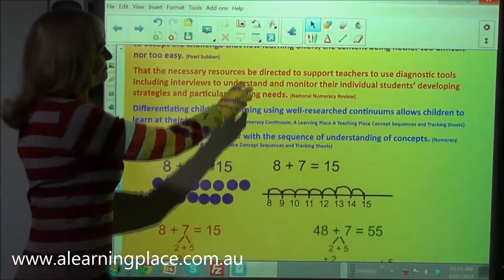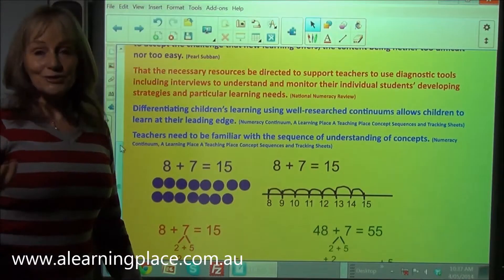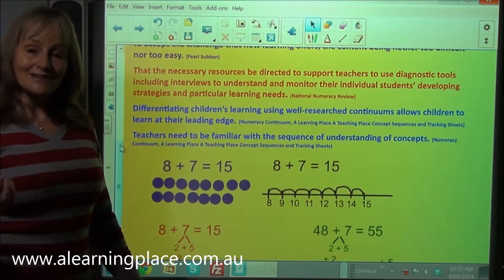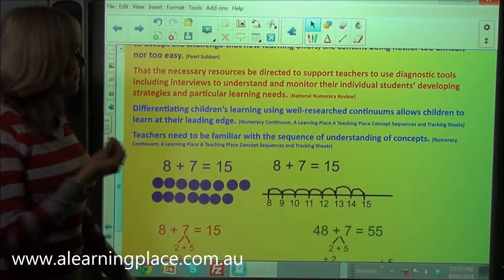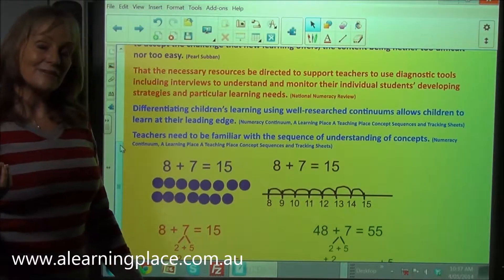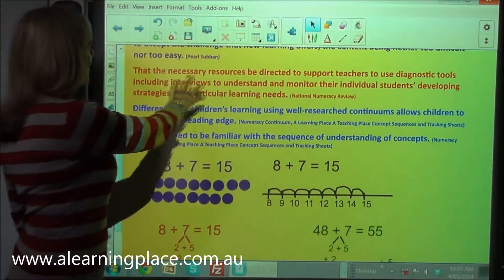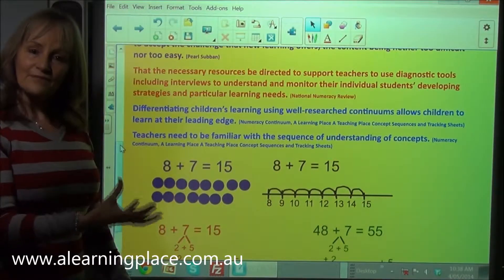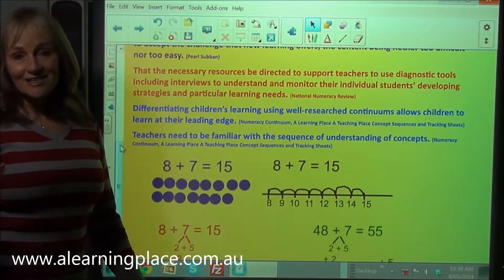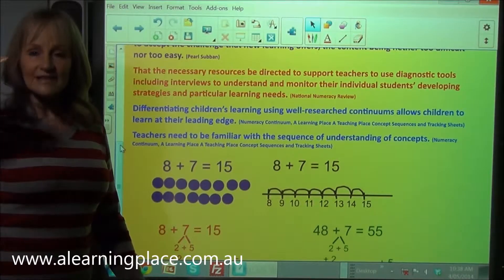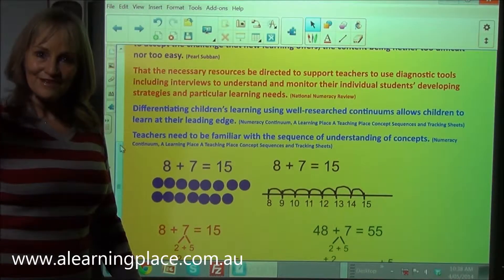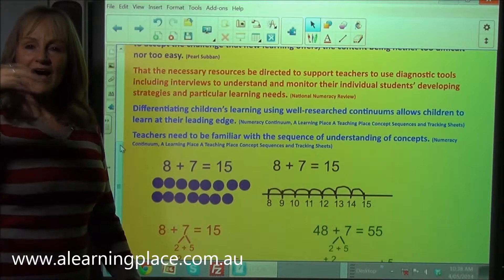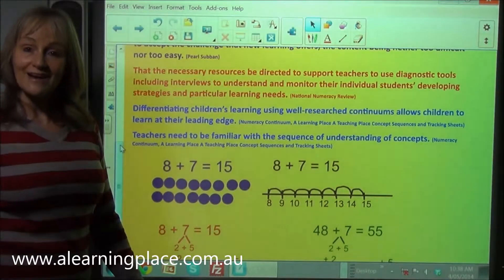Now the National Numeracy Review which came out in 2008, an Australian Review, came up with about 17 recommendations. One of them was that the necessary resources be provided to allow teachers to work out what level of understanding children have and then to allow the children to be learning from that level.